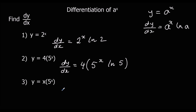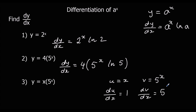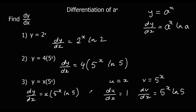For question 3 we've got two functions multiplied together, so it's the product rule. We say u is x and v is 5 to the power of x. So du/dx is 1 and dv/dx is 5 to the power of x ln 5. So dy/dx is u dv/dx, which is x times 5^x ln 5, plus v du/dx, which is 5 to the power of x. And there's our answer.